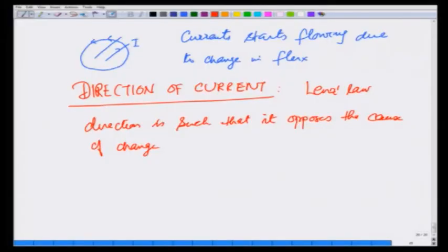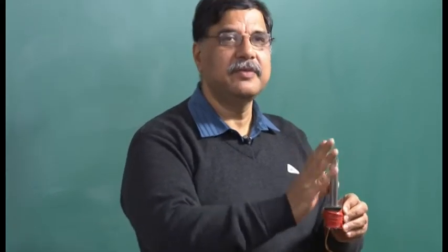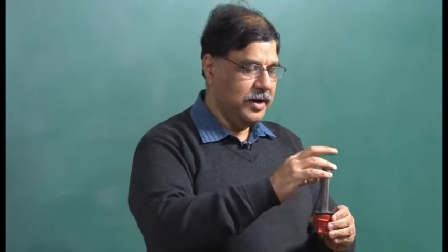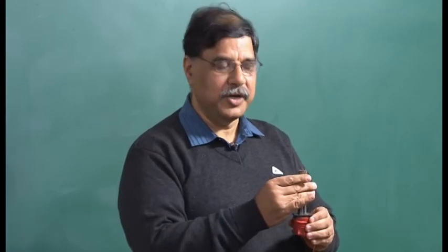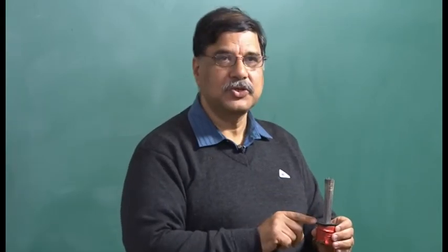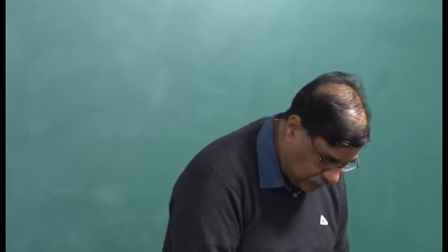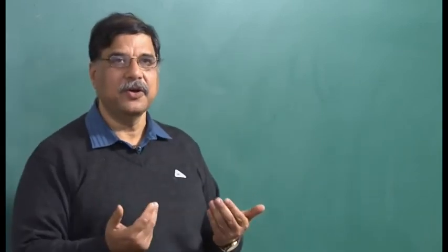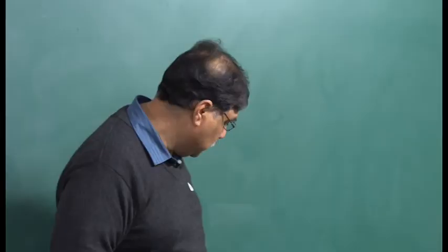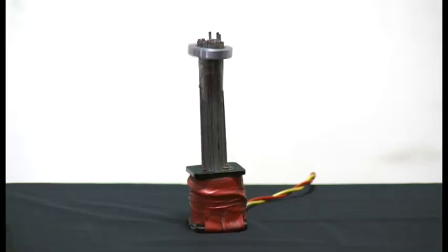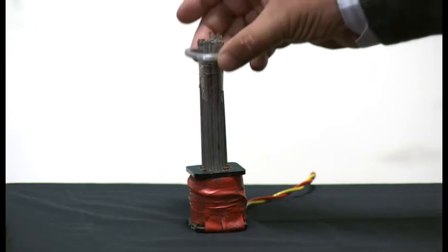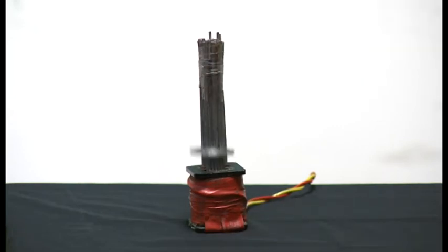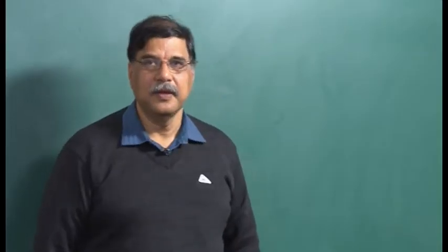The second thing is that the direction of EMF is such that it opposes the change — that is Lenz's law. Here we have a coil in which we have put iron spikes, developed in Professor H.C. Verma's lab, which make the magnetic field very strong. As soon as I switch on the switch, the current starts flowing and the ring will try to go away because the EMF generated in the ring is going to oppose the change. I switch it on and you will see that the ring jumps out — and that is Lenz's law.